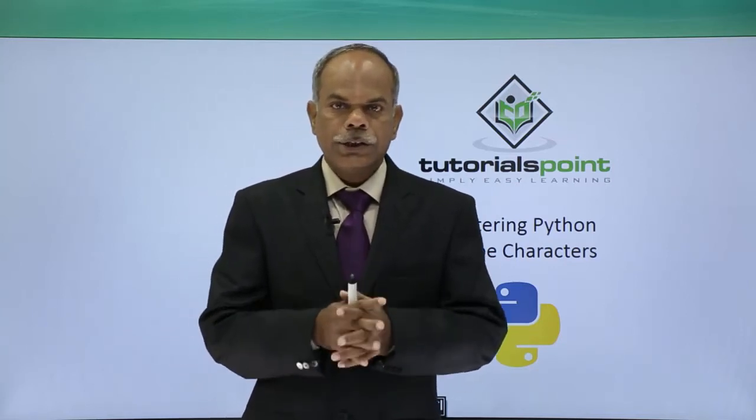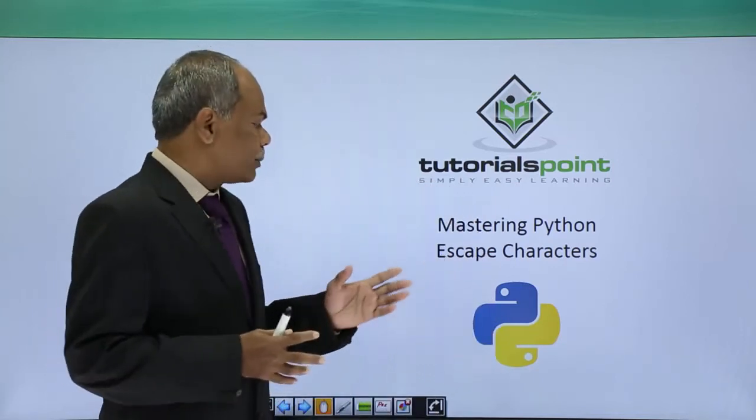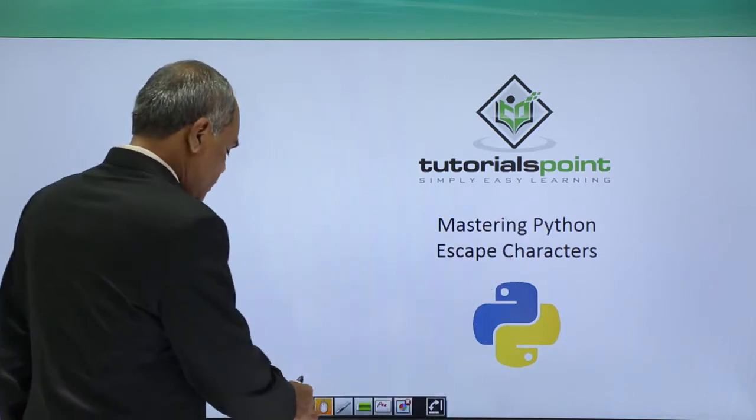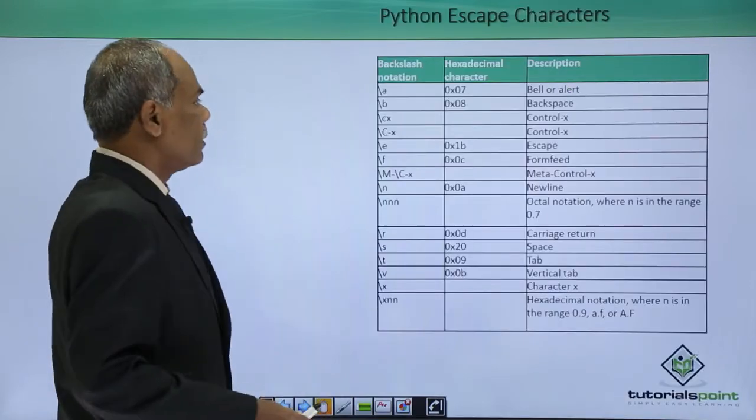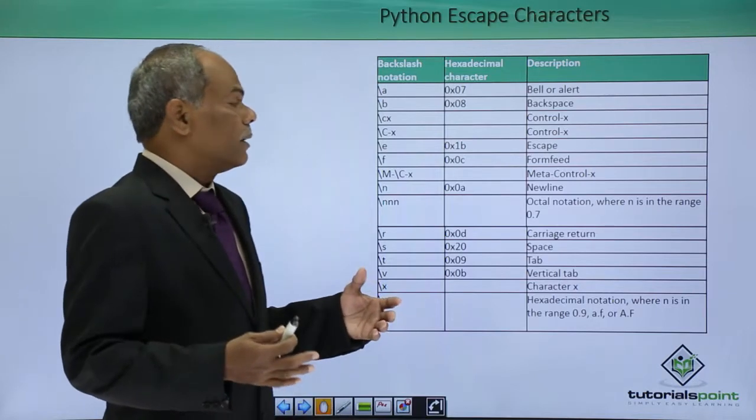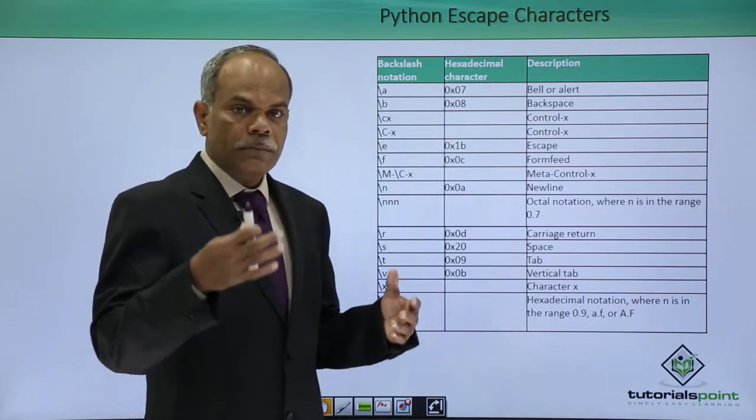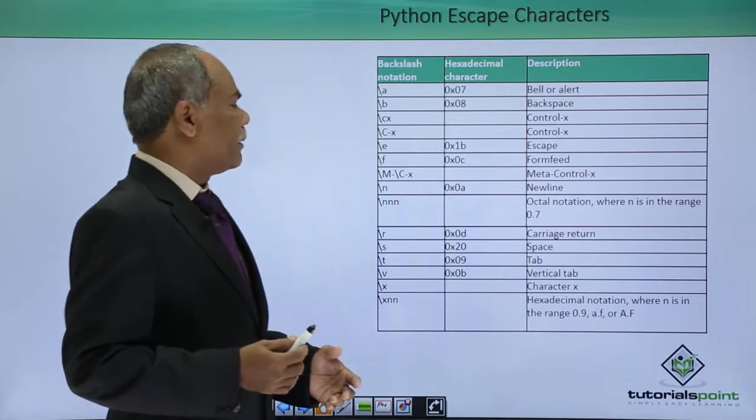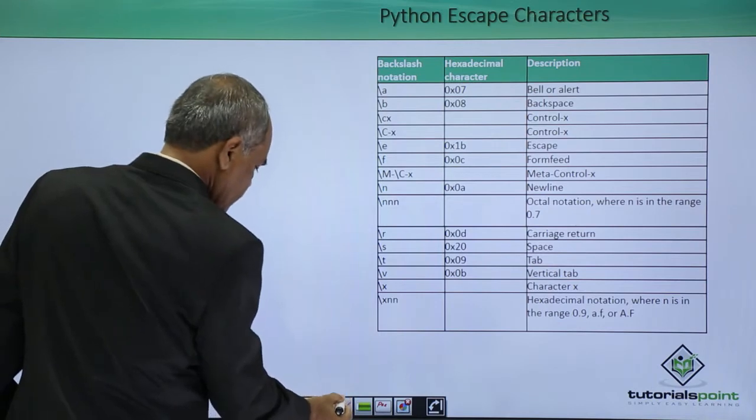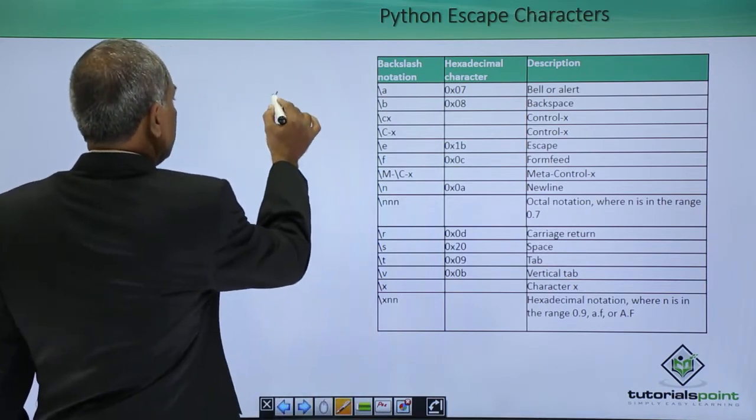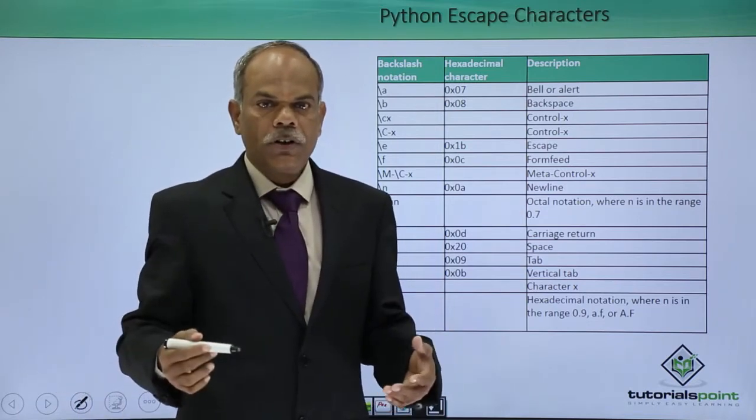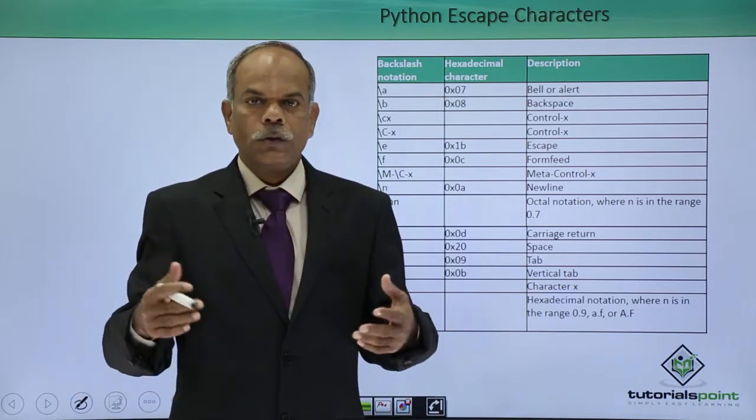Hello friends, in this video I will explain to you what are the escape characters in Python. Escape characters are those which have a certain special meaning in Python. For example, an inverted comma, either a single inverted comma or a double inverted comma, has a special meaning because it is used to represent a string. But what if you actually want to show a single or double inverted comma as a part of the string?